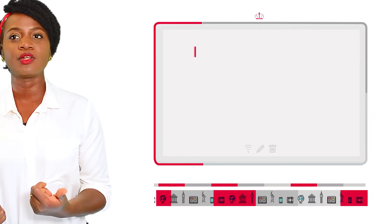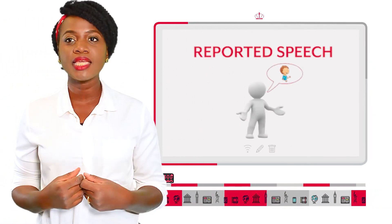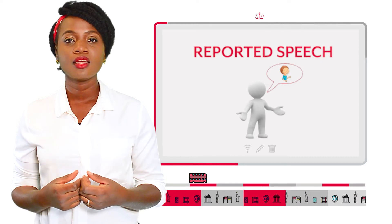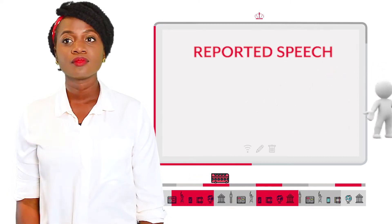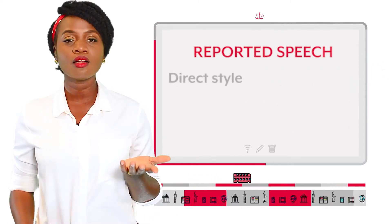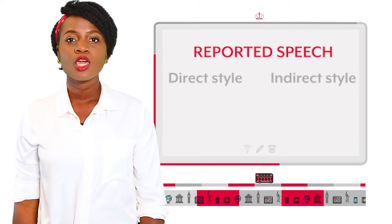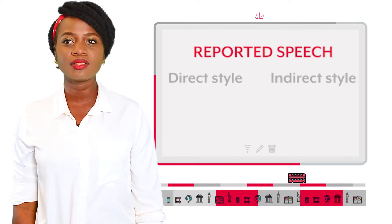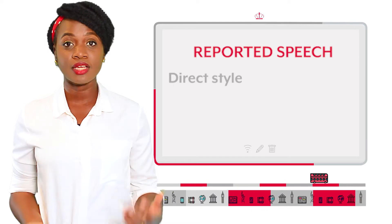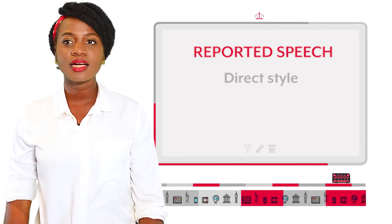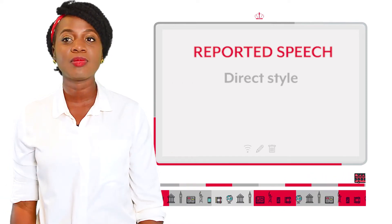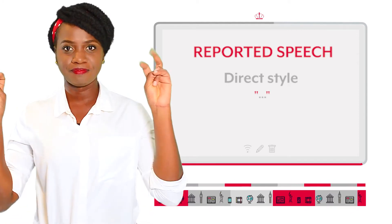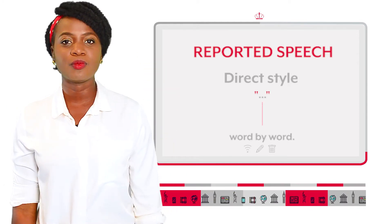Fast grammar. When we want to communicate or report what another person has said, there are two ways to do it: using direct style or indirect style. When we want to report exactly what someone else has said, we use direct style. With this style, what the person has said is placed in quotation marks and must be word by word.